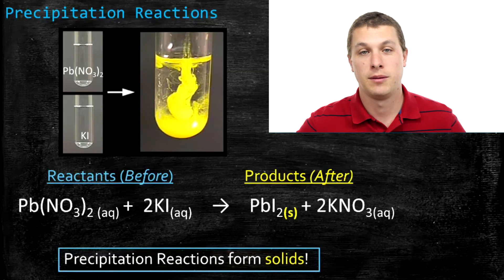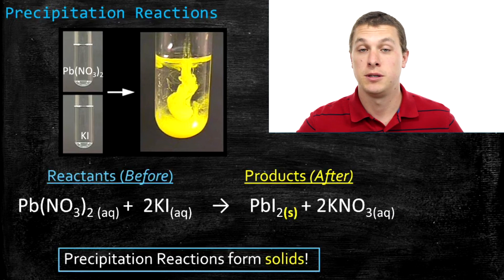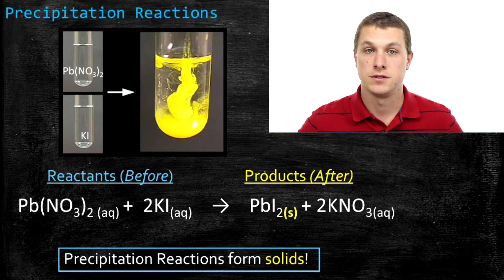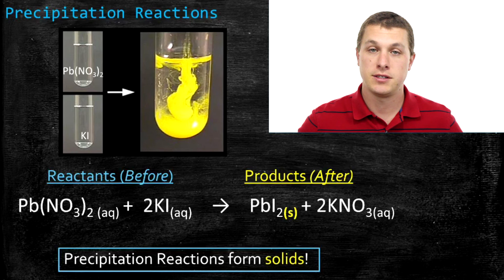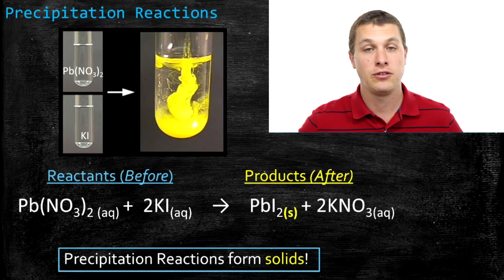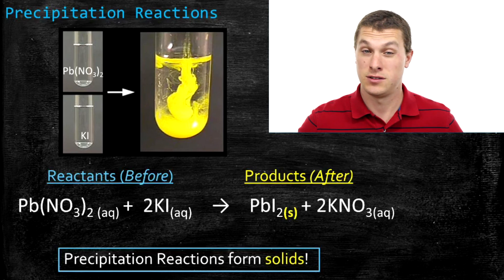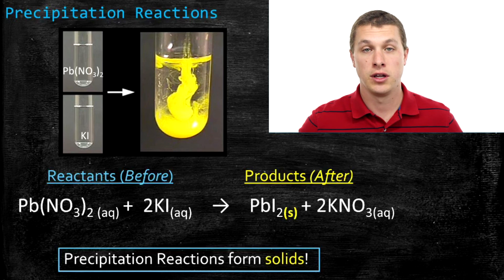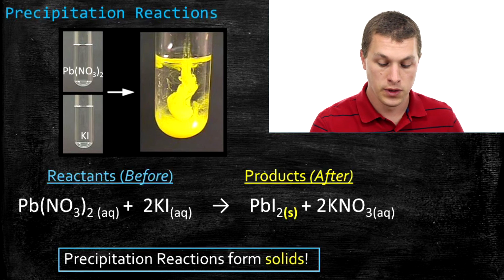Welcome to this episode of Real Chemistry. We're going to be talking about precipitation reactions. Precipitation reactions are just when you combine two aqueous chemicals — that is, dissolved chemicals — and get out a solid chemical.